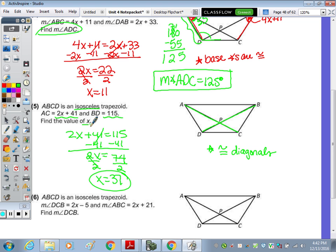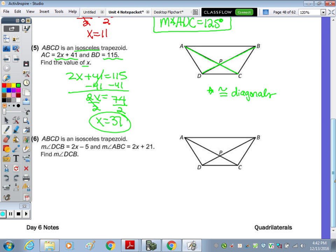Last one, number 6. Another isosceles trapezoid. Let's highlight what's given. Now we're taking a look at DCB. So this angle right here is 2X minus 5. And ABC, this angle right here, is 2X plus 21. Well since they're along a leg, and that's leg BC, they're not the same because it's only when they're along a base. We're just going to use the property for any trapezoid in that they are supplementary. So that means 2X minus 5 plus 2X plus 21 equals 180.